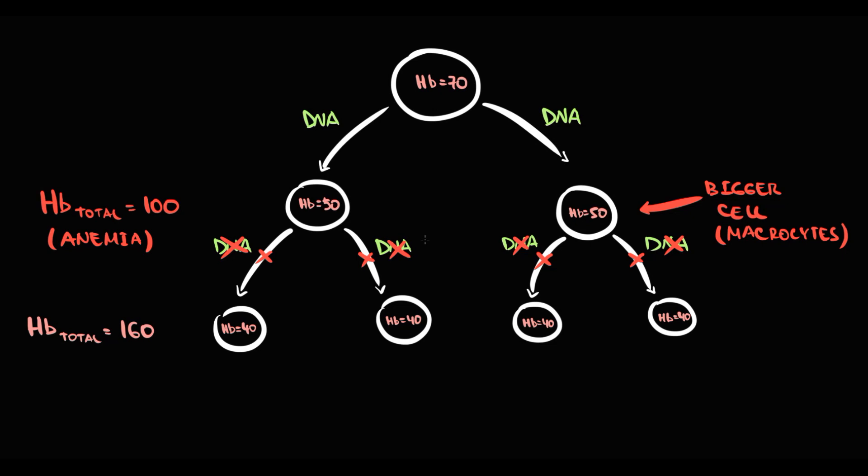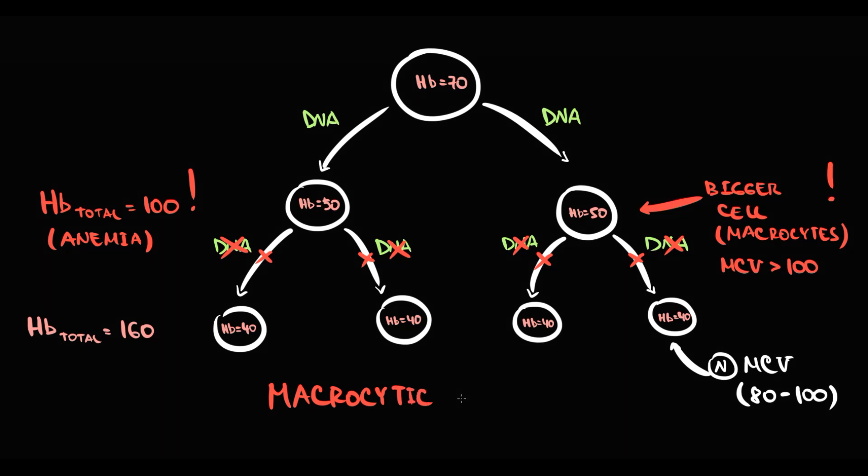Increasing red blood cell size we see in blood analysis as increasing MCV. Normal size of red blood cells gives MCV between 80 and 100. Macrocytes that are formed by one division less have MCV more than 100. So red blood cells that have bigger size we call macrocytes, and decreasing hemoglobin concentration we call anemia. Thereby, this state we call macrocytic anemia.